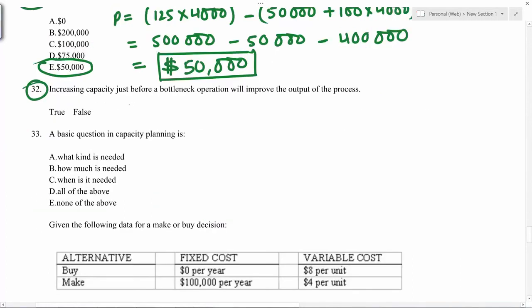Increasing capacity just before bottleneck will improve the output. That's false. Because unless the bottleneck is improved, the whole process output will not improve. Basic question in capacity planning is what kind is needed, how much is needed and when it is needed.